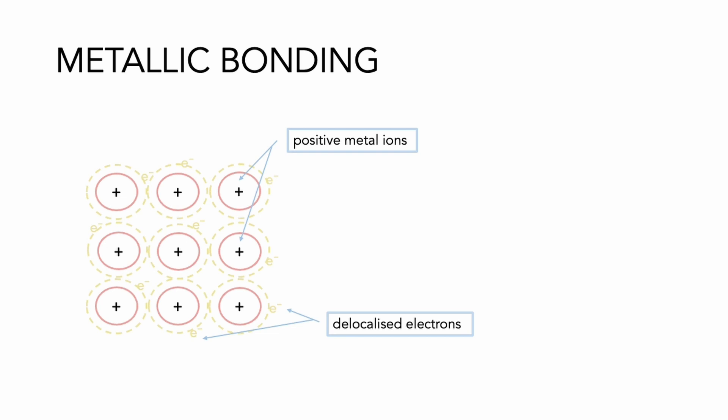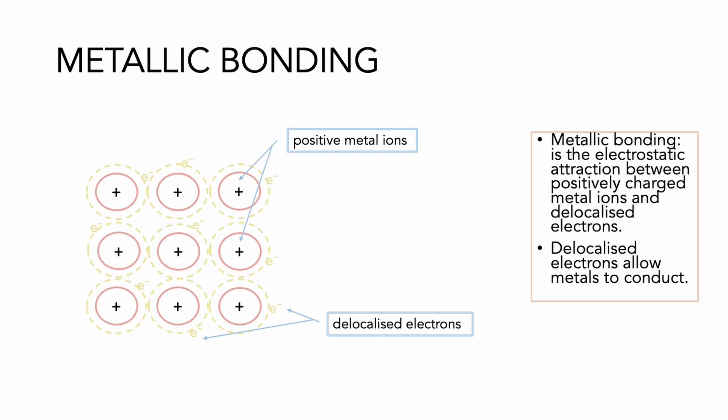The term delocalized was used to describe these electrons, and that just means that they are free to move around. When electrons are free to move, they can carry charge, so this explains why metals can conduct electricity.